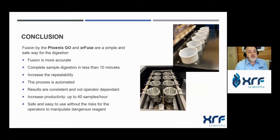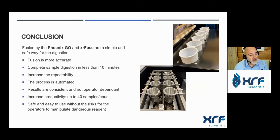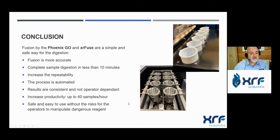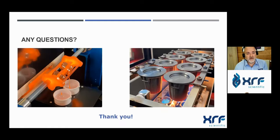In conclusion, the Phoenix Go and XR Fuse fusion machines are a simple and safe way to perform digestions. Fusion is more accurate because it is fully automated, with complete digestion in less than 10 minutes in the fusion machine and dissolution in approximately another 10 minutes. Repeatability is improved with automatic fusion. The process is completely automated — safe for the operator, operator-independent, and more reproducible. Productivity is high, and there is no need to handle dangerous reagents like strong acids. Thank you, and if you have any questions you're welcome.